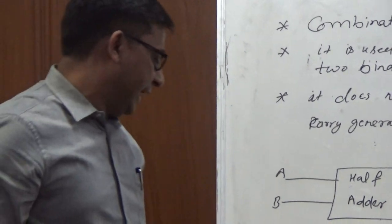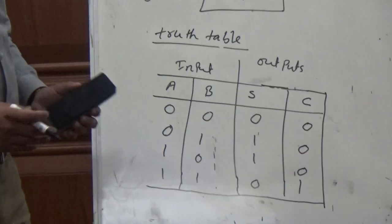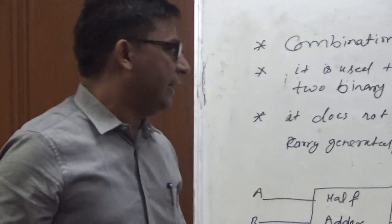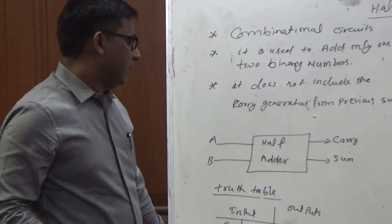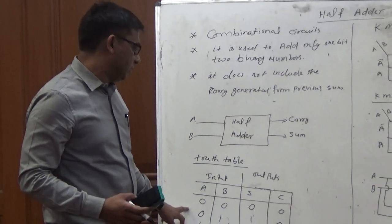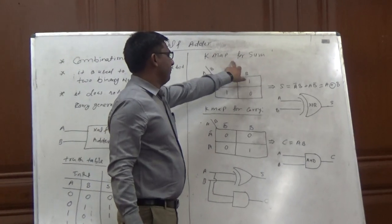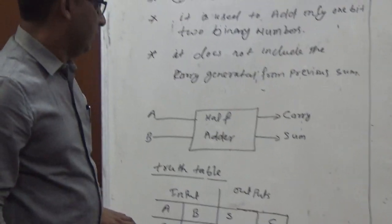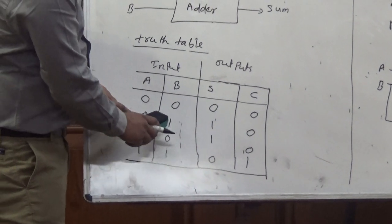To find out the Boolean expression for this truth table, we can solve this either using Boolean logic or we can go with the K-map technique. I am going to explain this truth table to get the Boolean functions using the K-map technique. K-map for the sum of this truth table. We can see that the sum exists only for two combinations.